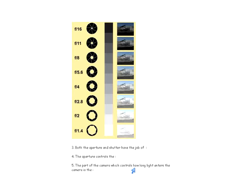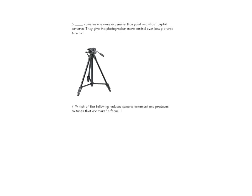DSLR cameras — Digital Single Lens Reflex — are more expensive than point-and-shoot digital cameras and give the photographer more control over how pictures turn out. If you see someone with a really big lens, chances are they have a DSLR. They cost anywhere from around $400–$500 up to $3,000.